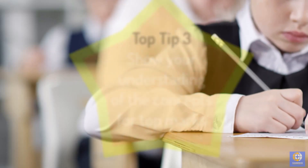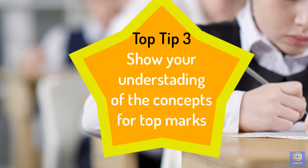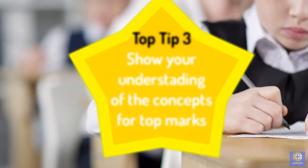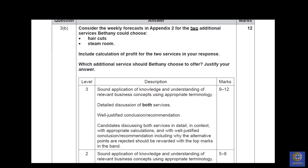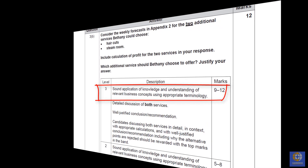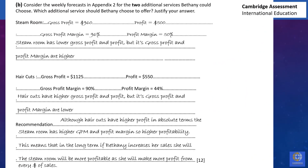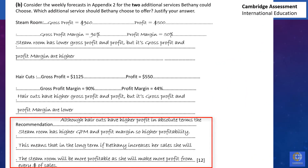Top tip three: show your understanding of the concepts. To get top marks in calculation questions, it's not just about doing the calculations and saying the profit margin for haircuts is bigger than for the steam room. You need to explain what the profit margin means — for example, if the profit margin is higher for haircuts, that means Bethany is getting a higher percentage of profit for every dollar of revenue she earns.